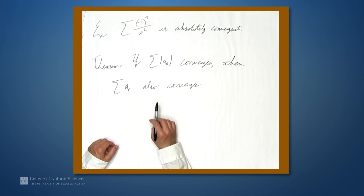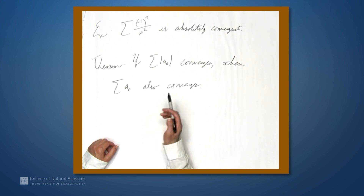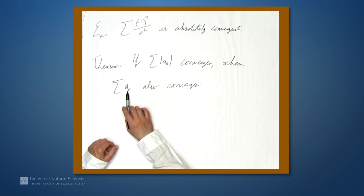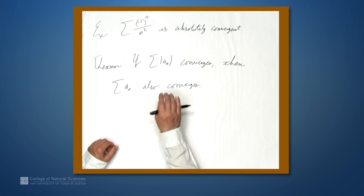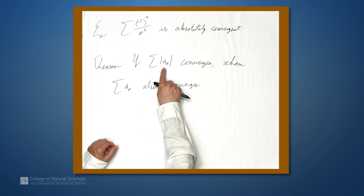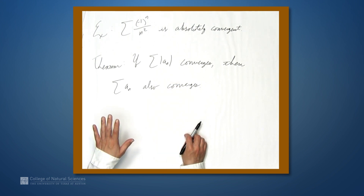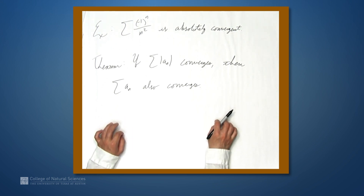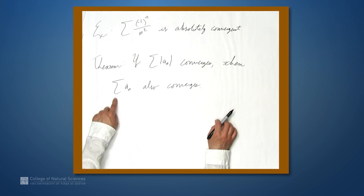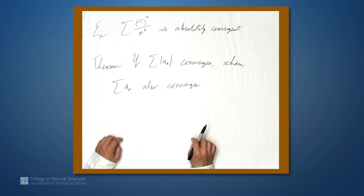This brings up a very important point: something cannot be both conditionally convergent and absolutely convergent. If the sum of the absolute values converges, then the sum of the original terms also converges. But conditional convergence is defined to mean that the sum of absolute values diverges. So something can be absolutely convergent, or it can be conditionally convergent, but it cannot be both. If something is absolutely convergent, then it's also convergent — that's what this theorem says — but it is not conditionally convergent.